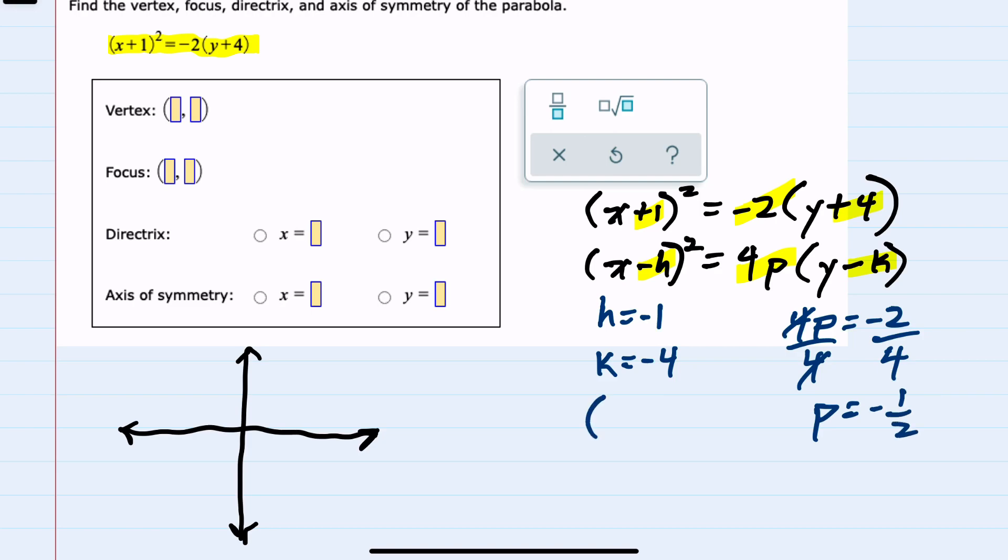So our vertex is the point h,k, which will be negative 1, negative 4. That was the first thing we were asked for, so I'll label that on our graph.